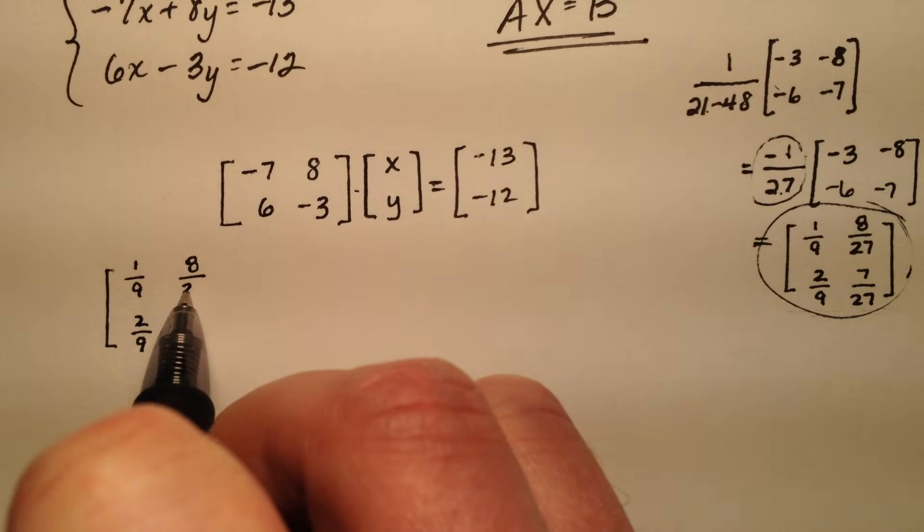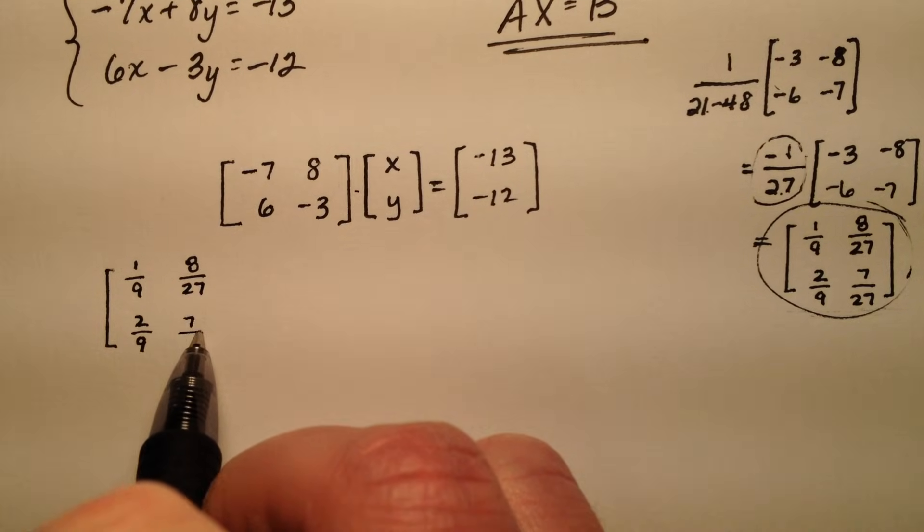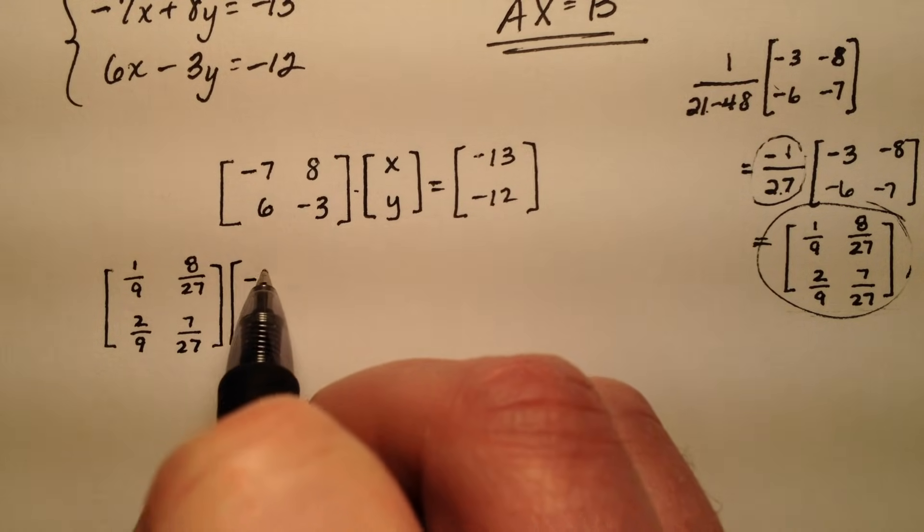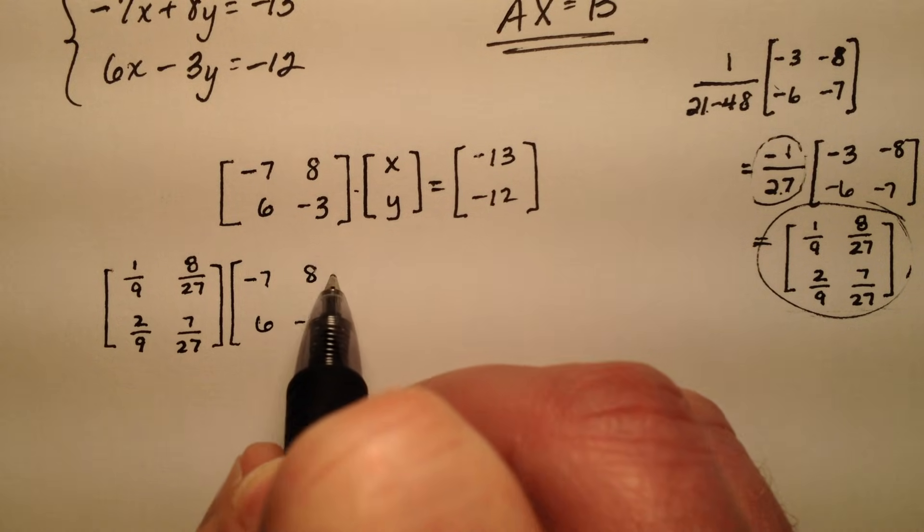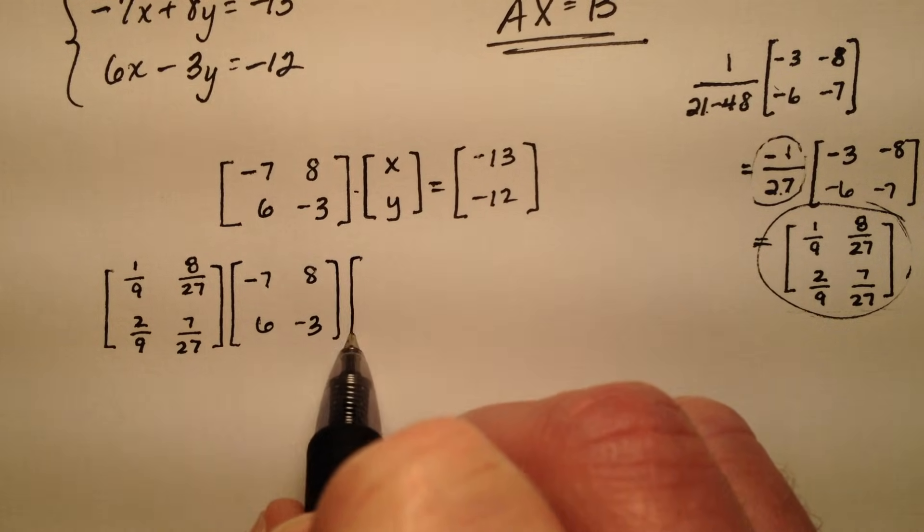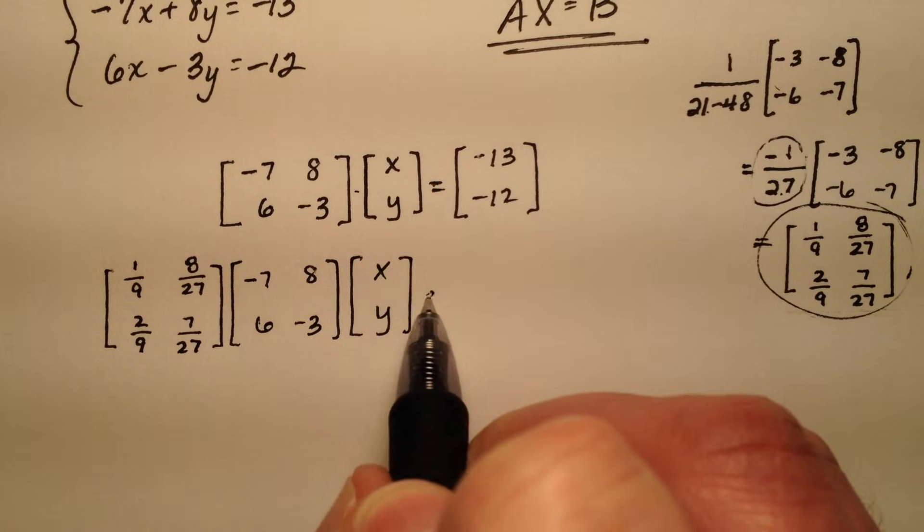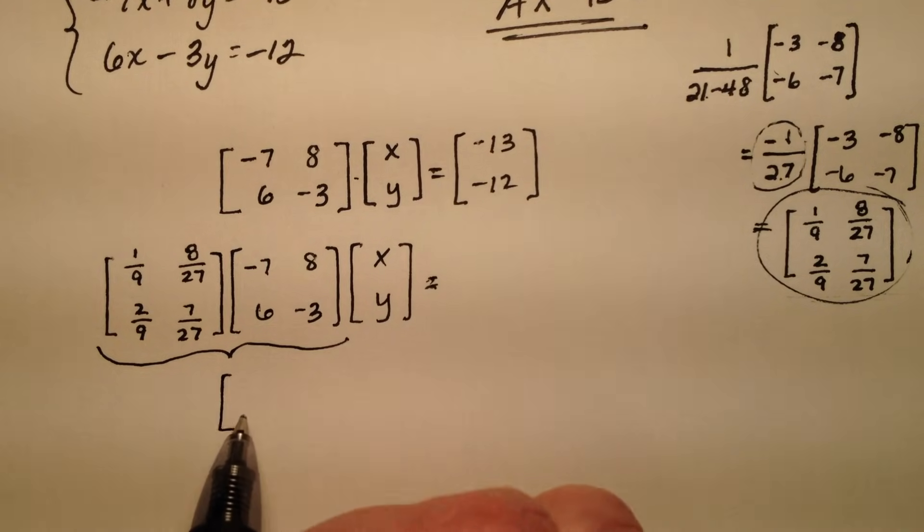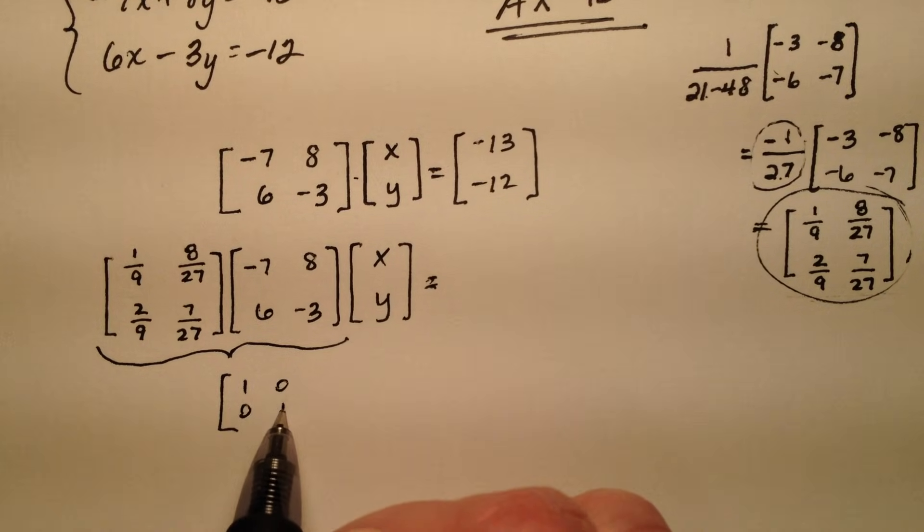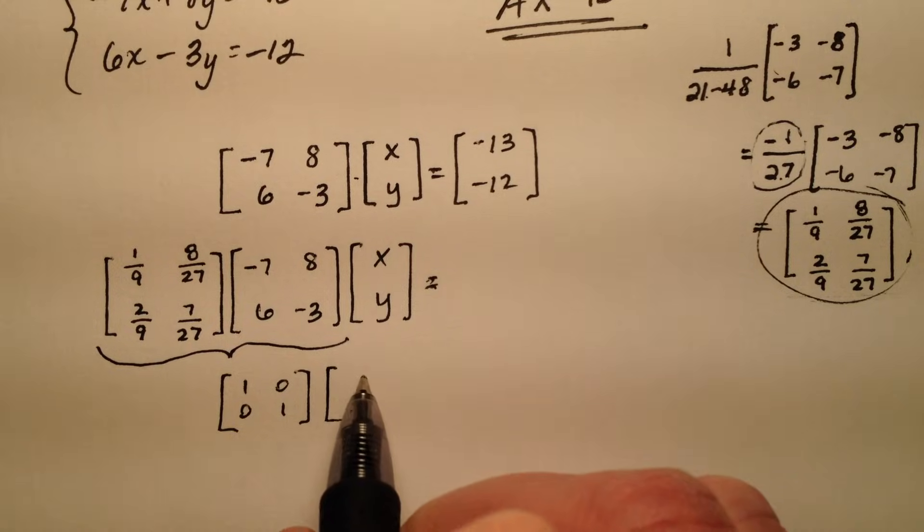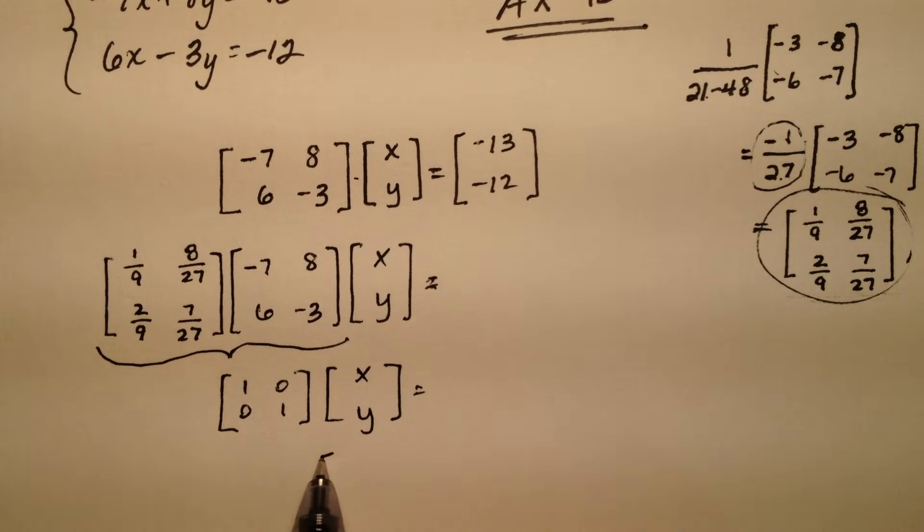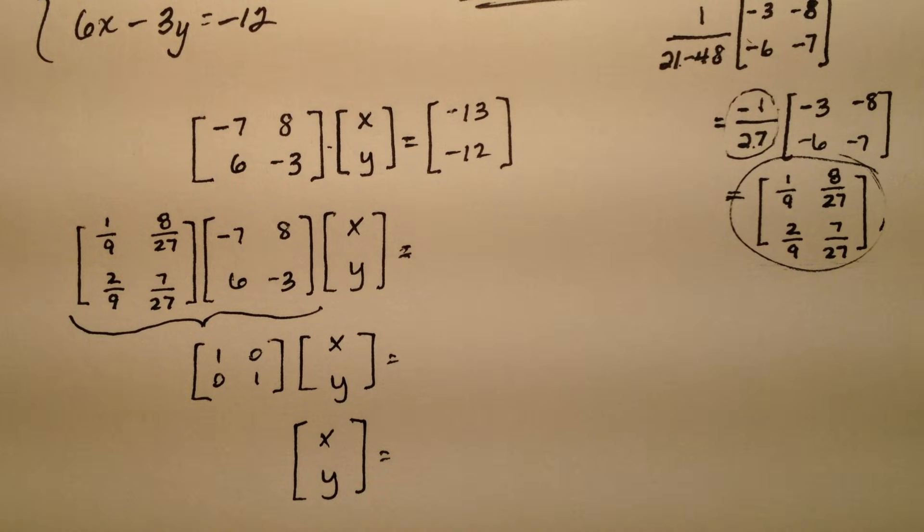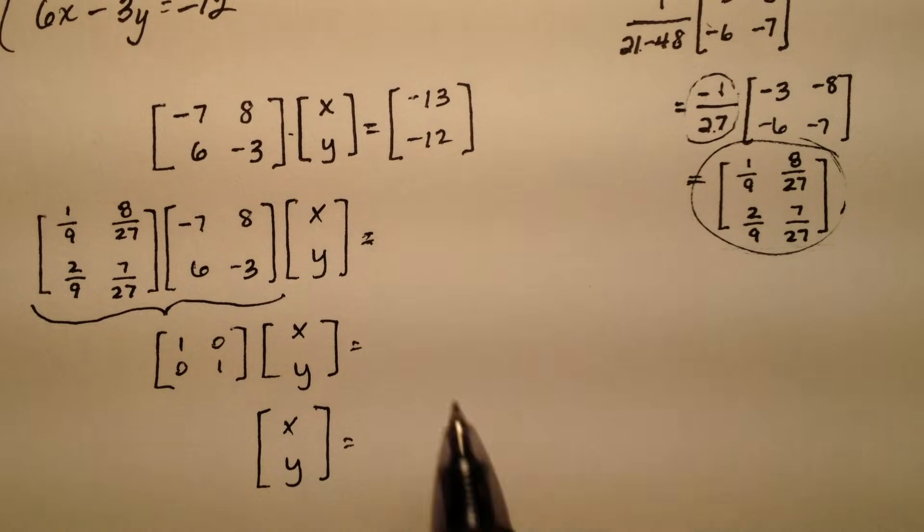Remember the beauty of this is this just becomes an identity matrix 1 0, 0 1 being multiplied by x y which really just gives me x y. So it's really only the right side that I'm concerned with.